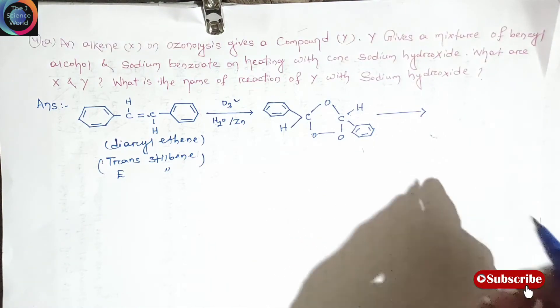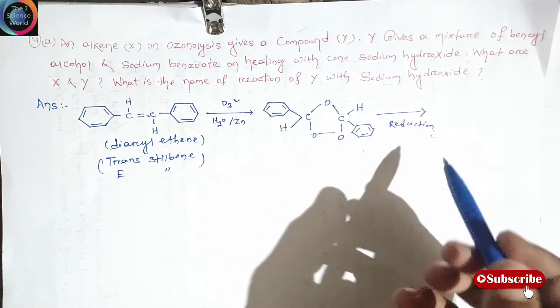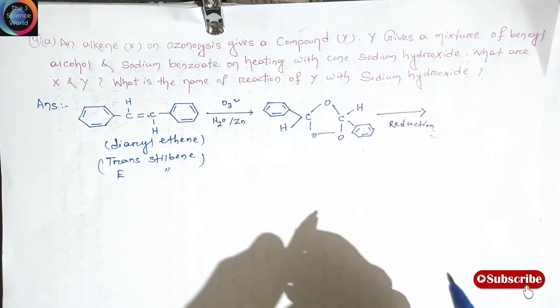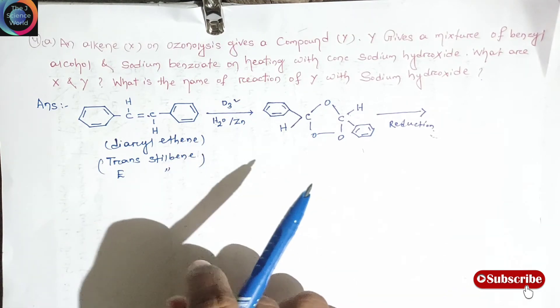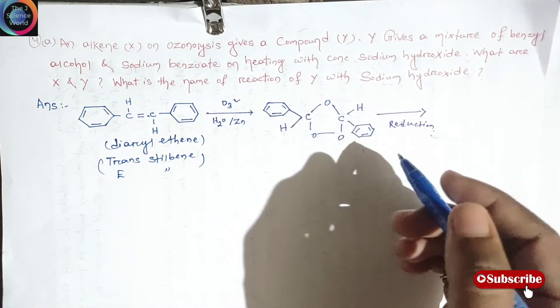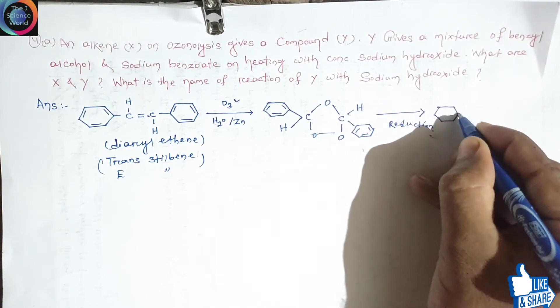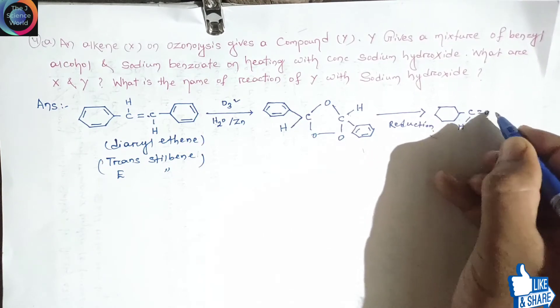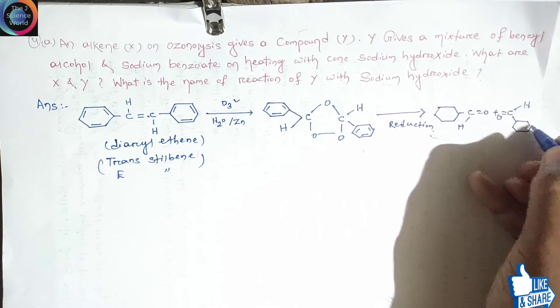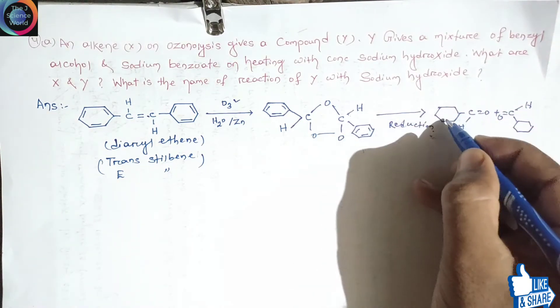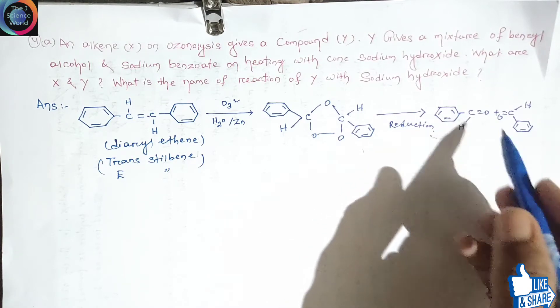The second step is reduction of ozonide. This is reduction to add cleavage of product. Let me tell you what will be the product formed. Let me tell you how to remember the reaction and the trick also. Do one thing, just take oxygen and join with carbon with double bond. This is how to do the conversion. Simply join oxygen to carbon in double bond. I hope it was clear to you.